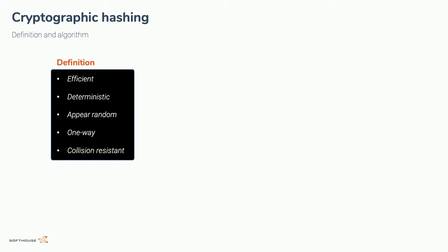A cryptographic hash must be deterministic — any input always produces the same result, which is important so we can compare data. It needs to appear random, so if we change just a tiny bit of input, the result looks completely different with no relationship to the original. If we get a random-looking output, we shouldn't be able to find what the input was. And critically, it must be resistant to collisions — it should be very hard to find two inputs that produce the same result.